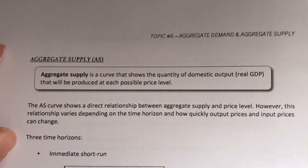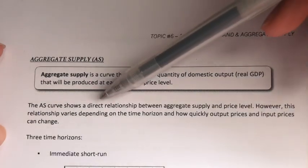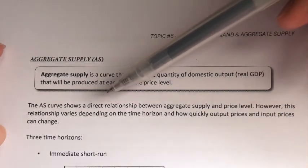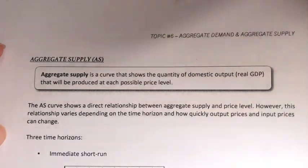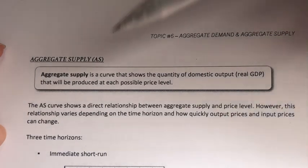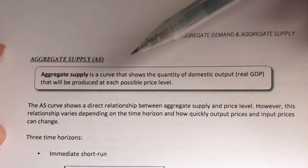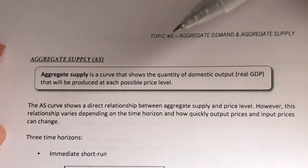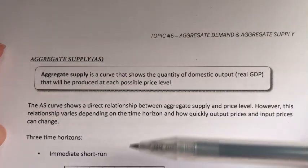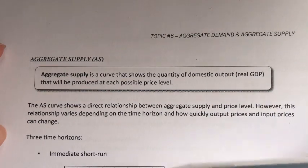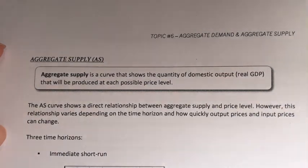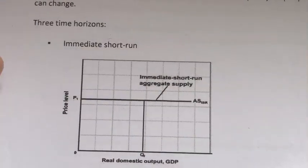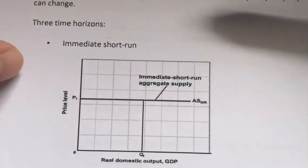However, the shape of the aggregate supply curve is not necessarily upward sloping. Because normally when we say something has a direct relationship, we always envision an upward sloping curve. But in the case of aggregate supply, there are actually three types of shapes, depending on their time horizon and depending on how quickly output prices and input prices change. Let's take a look at the three different time horizons.